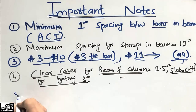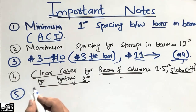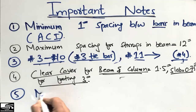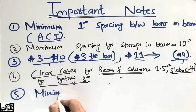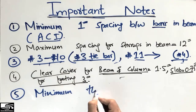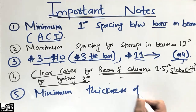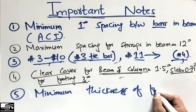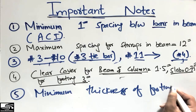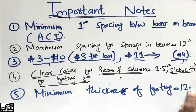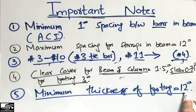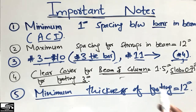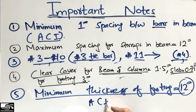The last point is that the minimum thickness of a footing should be 12 inches. It should not be less than 12 inches. It may be more than 12 inches, but it must not be less, according to ACI.